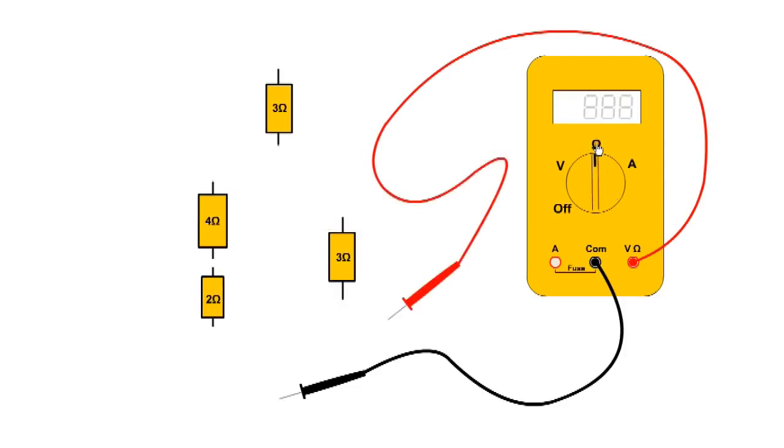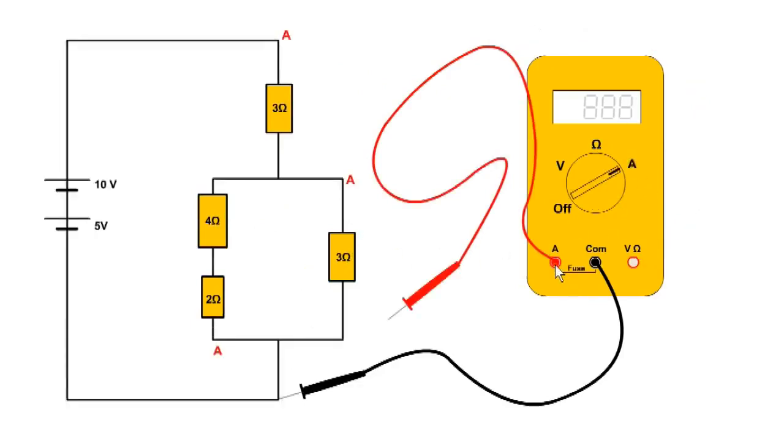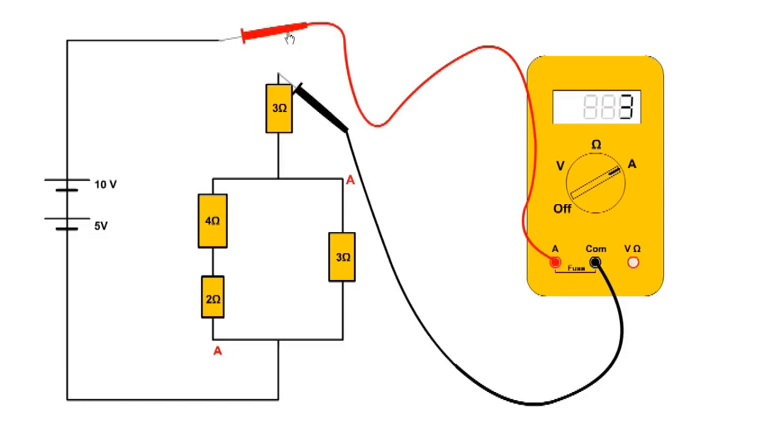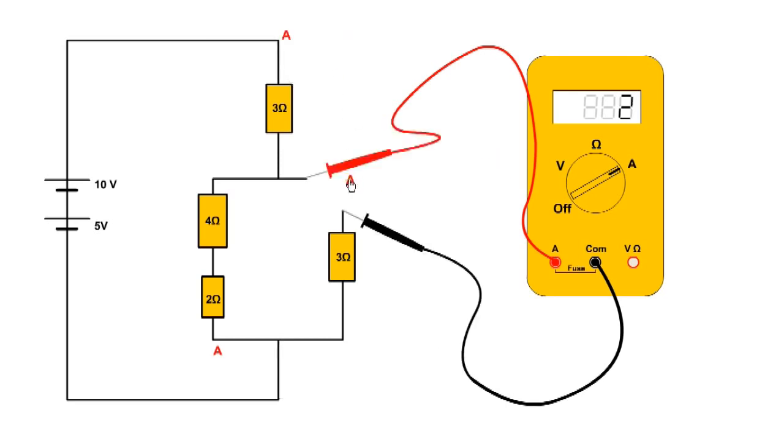To measure resistance, ohms is selected and the resistors are disconnected from the circuit. To measure current, one of the measuring leads must be changed to the current measuring port and amps is also selected. To measure current, we must break into the circuit and allow the current to flow through the multimeter. There is 3 amps at the top of the circuit, which divides into 2 amps and 1 amp.